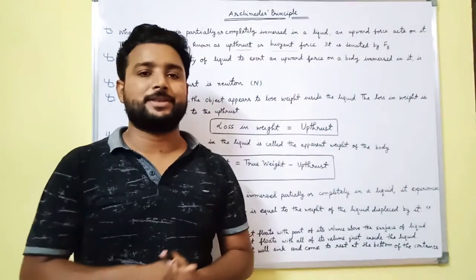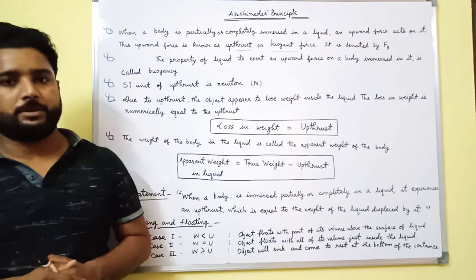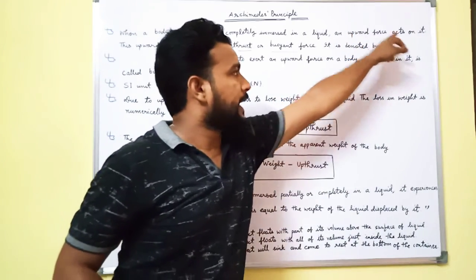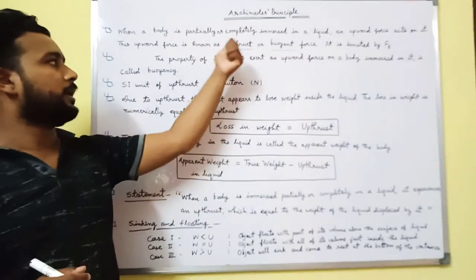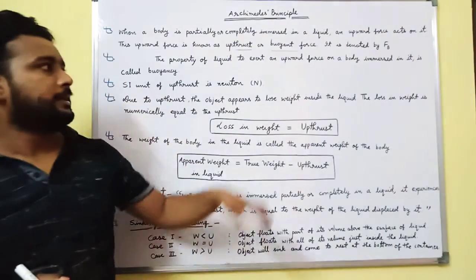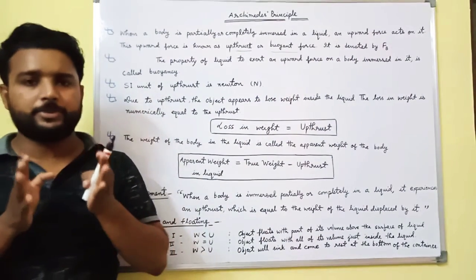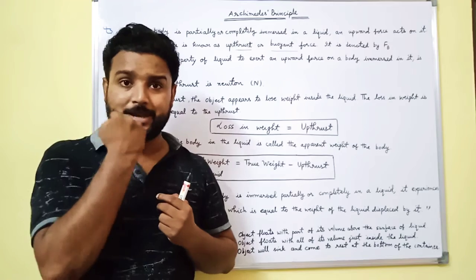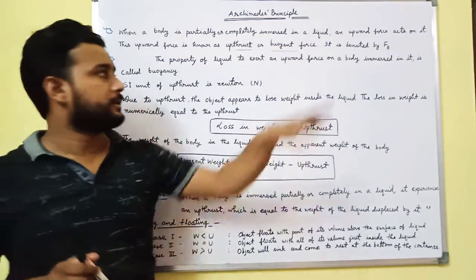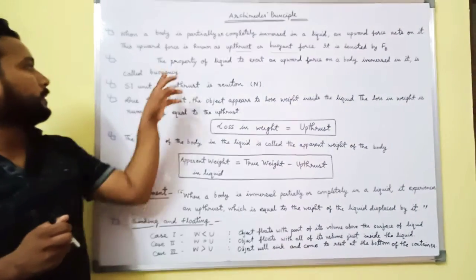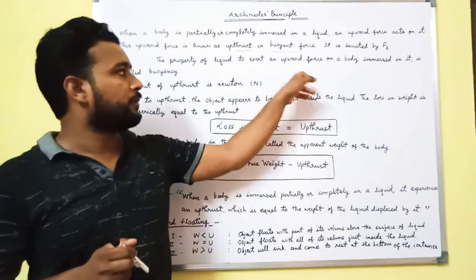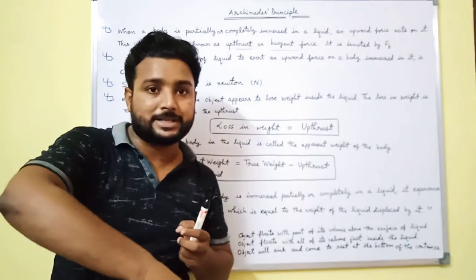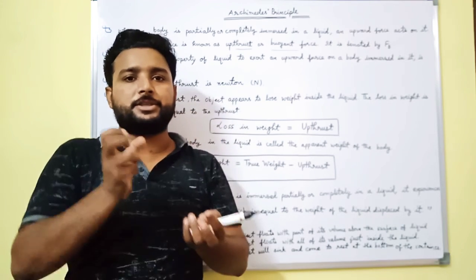Today in this session we will discuss our 20th principle. When a body is partially or completely immersed in a liquid, an upward force acts on it. This force is known as thrust or buoyant force, denoted by Fb. The property of liquid to exert an upward force on a body immersed in it is called buoyancy.